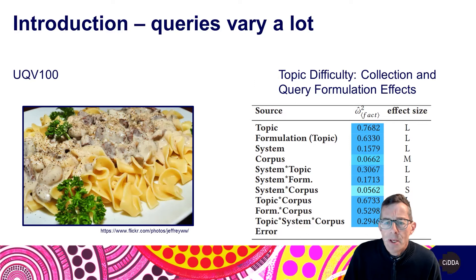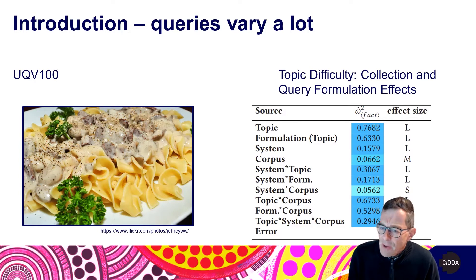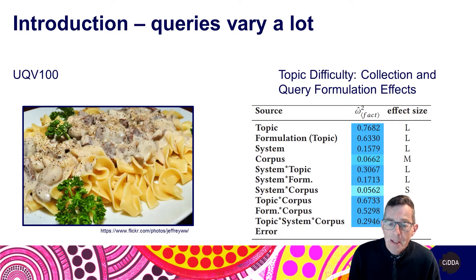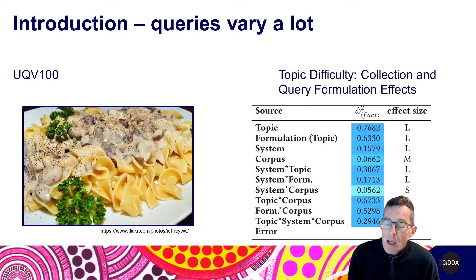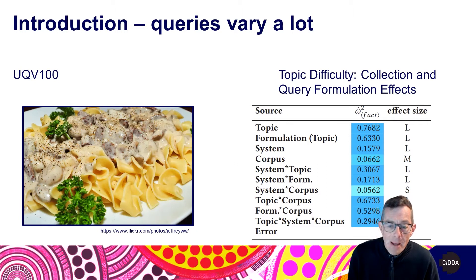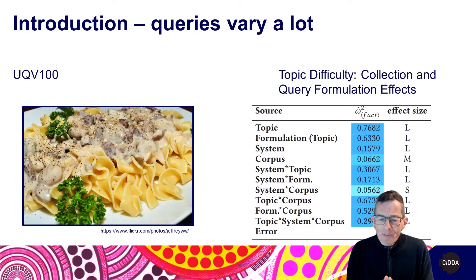For example, if you take a look at this paper published in TOIS — the 'Topic Difficulty Collection and Query Formulation Effects' paper — it does a very interesting ANOVA analysis comparing the impact of topics, the way that queries are formulated, and the impact of different system algorithms. The numbers in that blue column indicate the relative importance of these different factors, and what you see is that the way we formulate our query is almost as important as the kinds of topics that we search on a system. The algorithms and systems that we use barely impact on the ultimate results that we see. Query variation and query formulation is a critically important aspect.